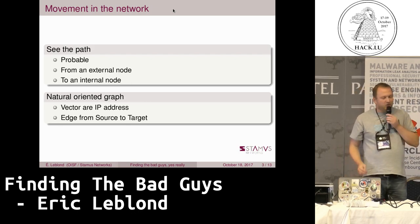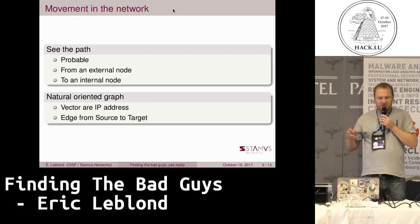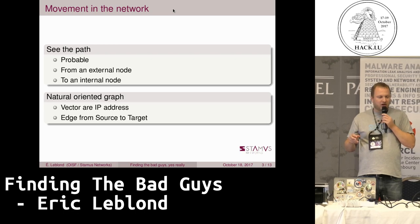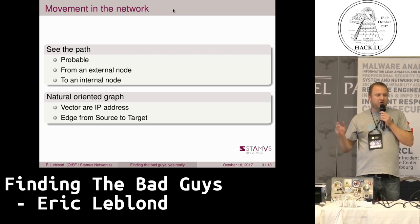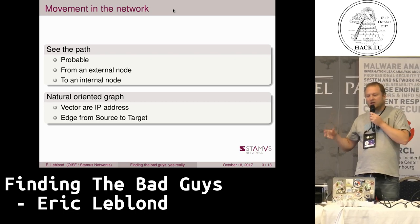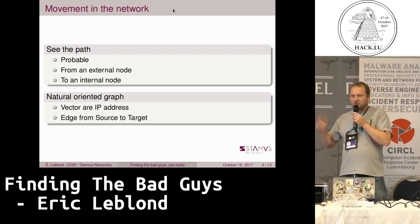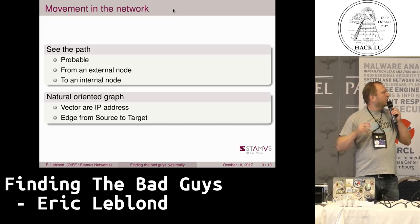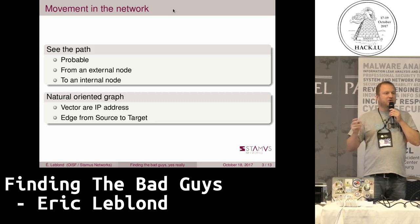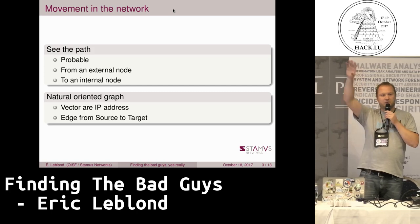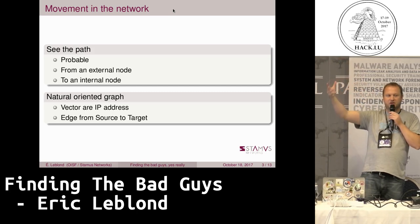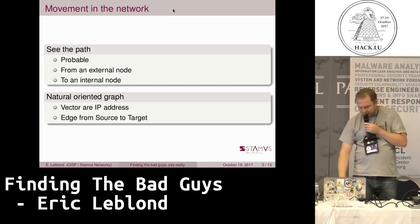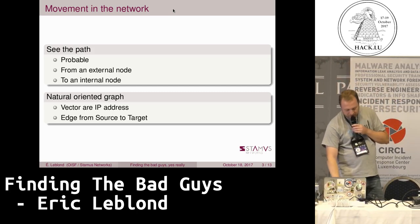One thing that could be really useful to draw is a graph — an oriented graph where you have the source and target in the network and an edge between the source and the target, so you can see the path visually on the graph. Really easy.